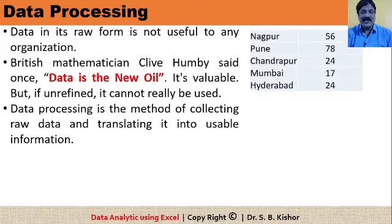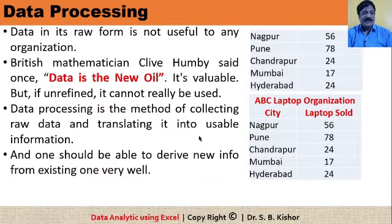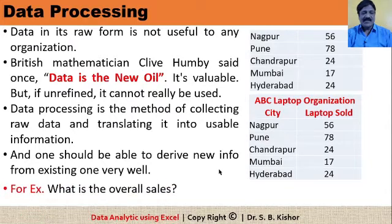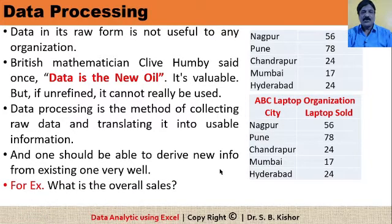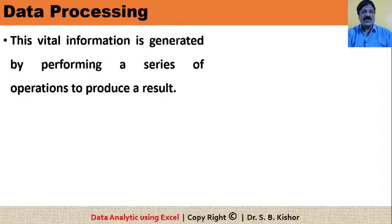So it is necessary that you should be able to convert raw data into meaningful information. Data processing is the method of collecting raw data and translating it into usable information. For example, now it's very easy to convey that this number represents the number of laptops sold by a particular organization. With this information you can derive new information — for instance, to find the overall sales, you simply need to find the sum of these numbers. This is one common operation of data processing.